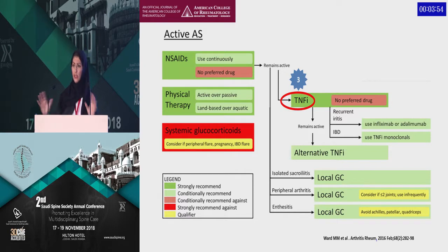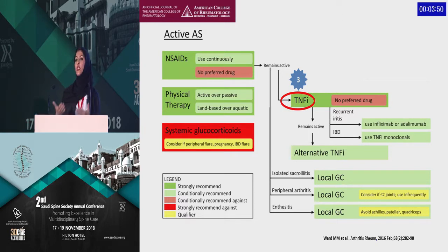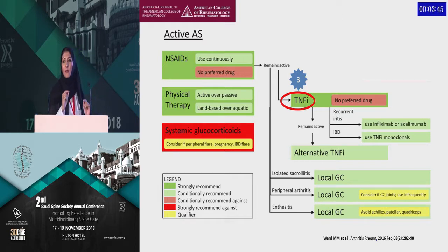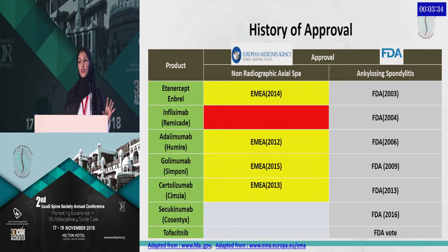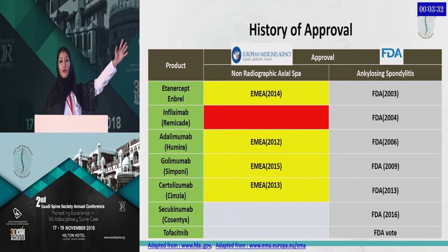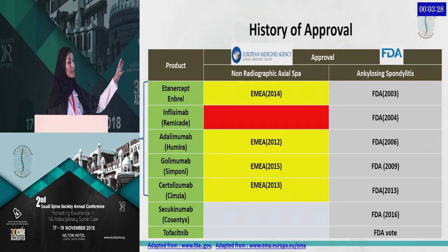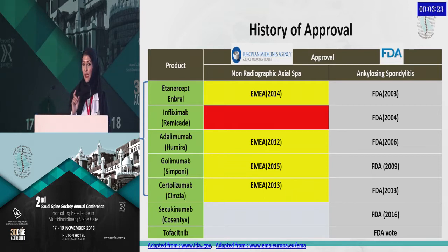Now, what if the patient didn't respond to NSAIDs and didn't respond to physiotherapy, and she reached me at that point? This is the beauty of rheumatology — this is my part. I'm going to justify that this patient has active disease and start a biologic agent, whether it's anti-TNF or non-anti-TNF. If you look at the far right, we have many FDA-approved biologics — anti-TNF and non-anti-TNF — i.e., different mechanisms of action, for ankylosing spondylitis.